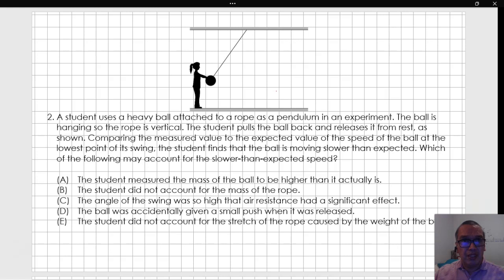Probably the best way to find a reasonable explanation for this phenomenon is to go over the answers one at a time and try to determine whether the explanation is reasonable or not. Let's do that. Option A: The student measured the mass of the ball to be higher than it actually is.